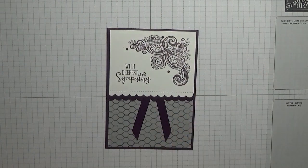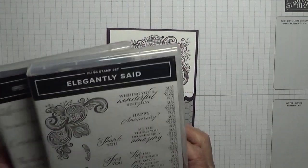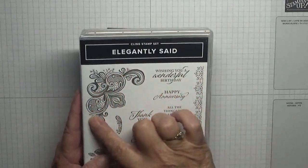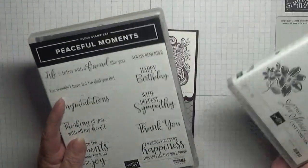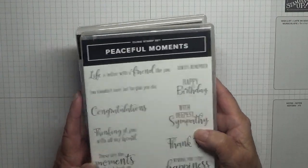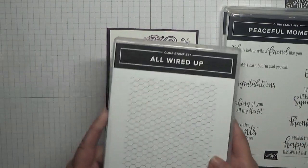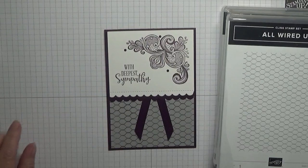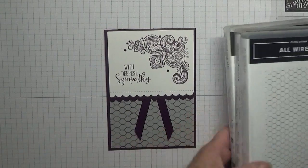The stamp sets I used a few actually: Elegantly Said, I used that image there, Peaceful Moments, and I used With Deepest Sympathy, All Wired Up for the pattern at the bottom. So that's what I've used there for the stamp sets.